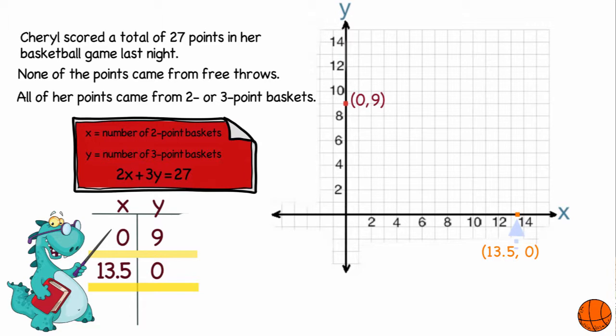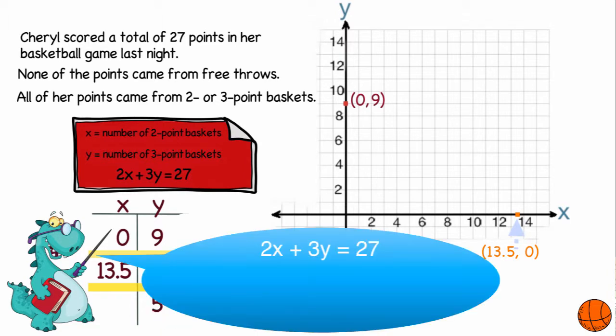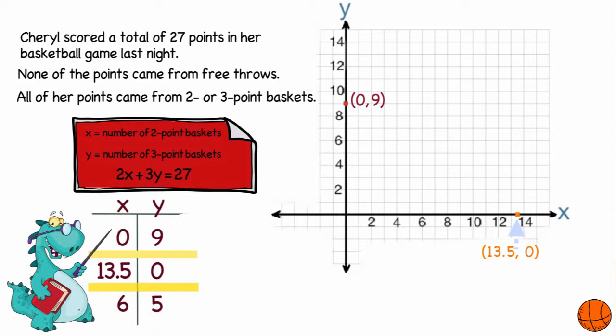So suppose she made, let's pick five three-point baskets. And I'll plug that into my formula. It would be 2x plus 3 times 5 equals 27. 2x plus 15 equals 27. Subtract 15 from both sides. I get 2x equals 12. Divide both sides by 2. I get x equals 6. So I now have six two-point baskets and five three-point baskets.